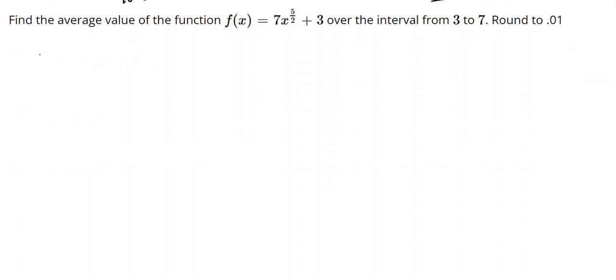Once again, we want to find the average value of this function. 1 over b minus a would be 1 over 4 times the integral from 3 to 7 of 7x to the 5 halves plus 3 dx. So no u-substitution on this. Just straightforward use of the power rule.